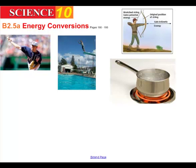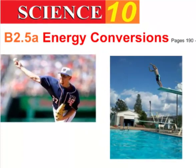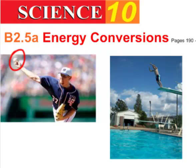Looking at some of these illustrations, we can see some very typical energy conversions. For example, this pitcher throwing the ball is using the energy stored in his muscles to impart kinetic energy to the ball. What we're seeing is chemical bond energy in his muscles being converted into kinetic energy moving the ball.